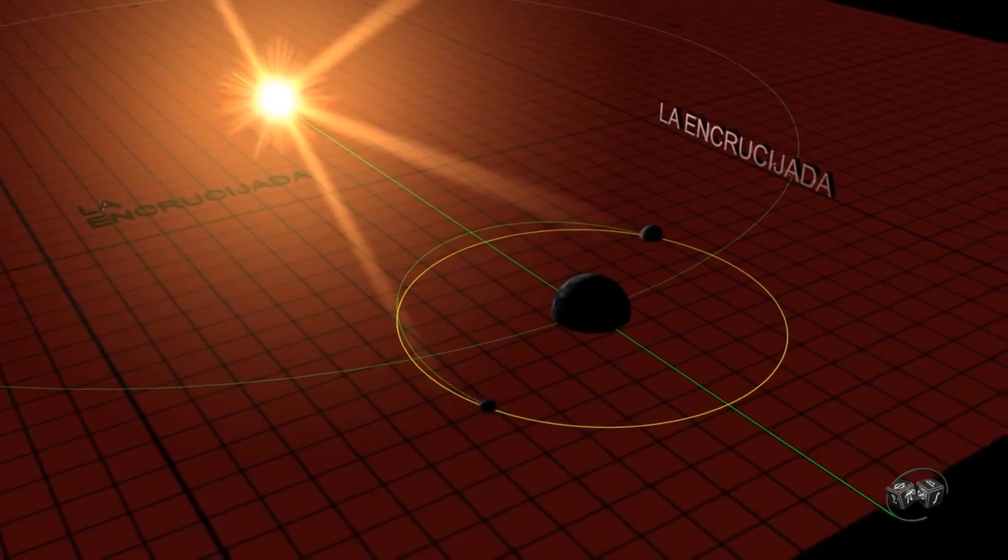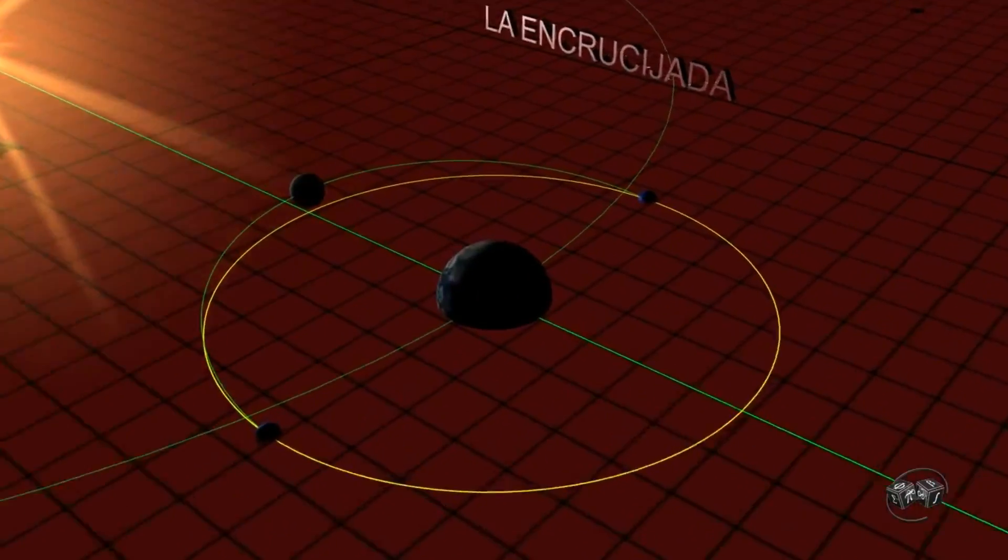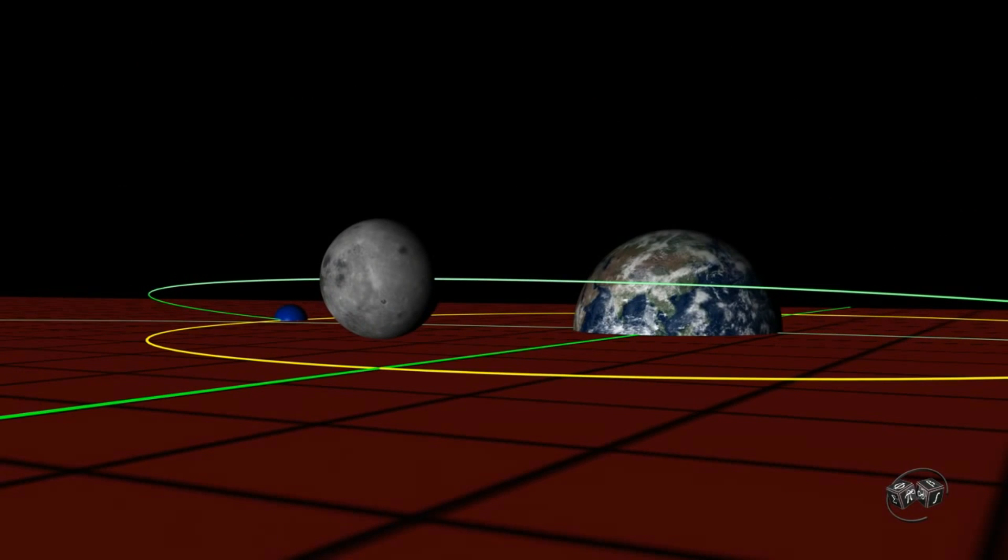In any other position of the nodes eclipses will not occur, because the Moon would never be aligned between the Sun and the Earth, even though the Moon is in the middle of both bodies, as the Moon does not coincide with the plane of the ecliptic.